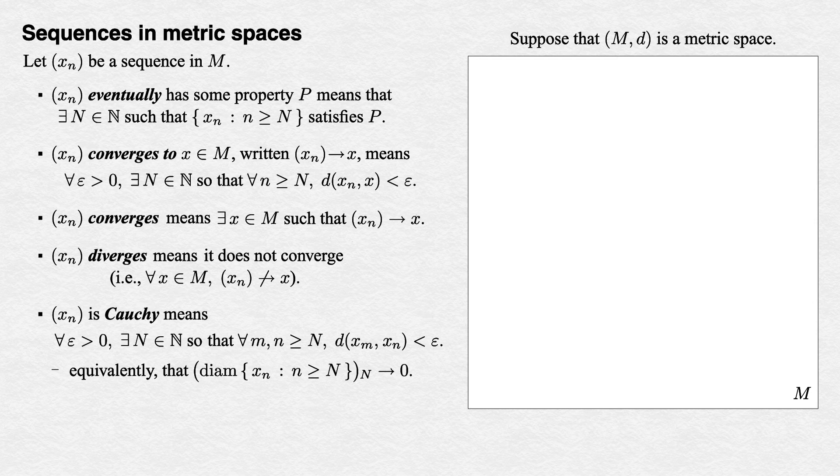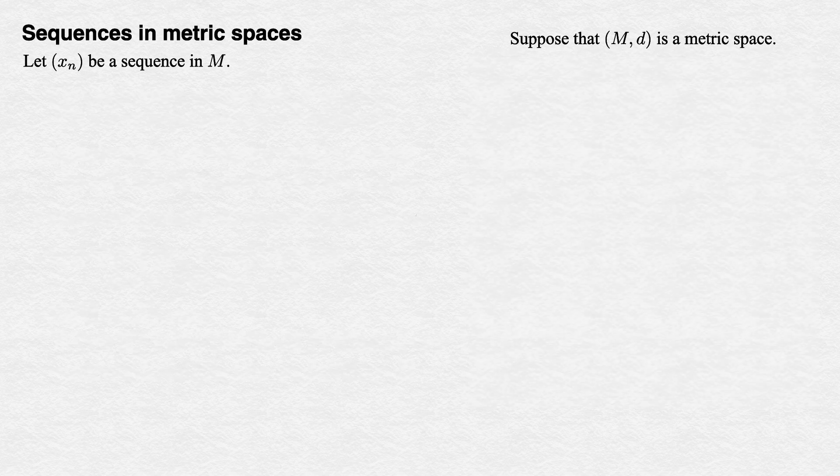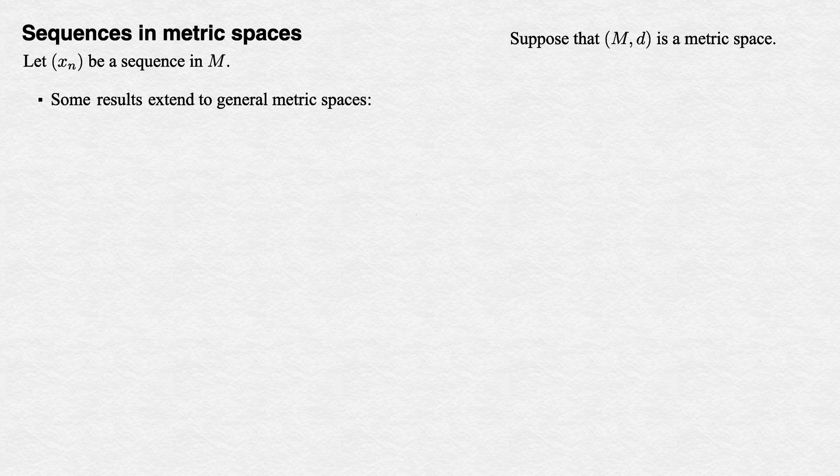That's it for sequence concepts. The notions of convergent, divergent, and Cauchy translate fairly directly into the metric space context, which opens them up to a much broader world of mathematics. Some of what we know about these concepts remains true in this context of metric spaces, but not everything. Let's finish up by going through some of the results we have for sequences of real numbers, seeing which ones still work and which ones don't in general metric spaces.